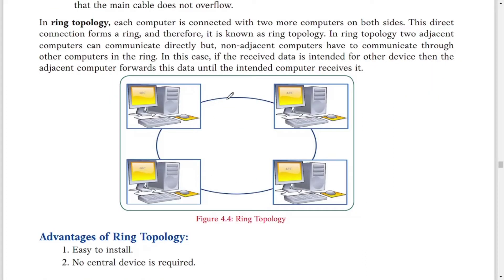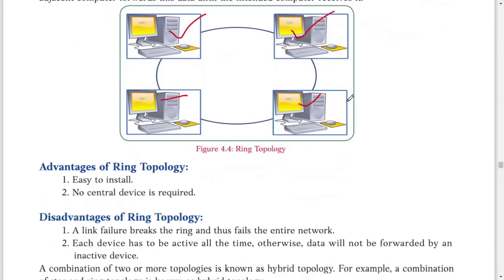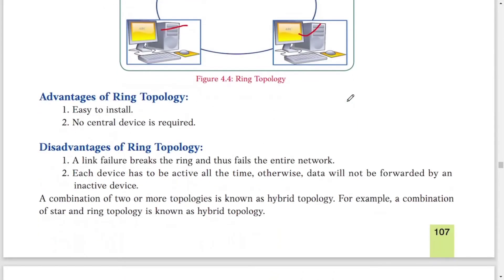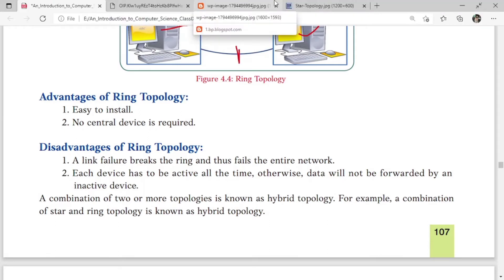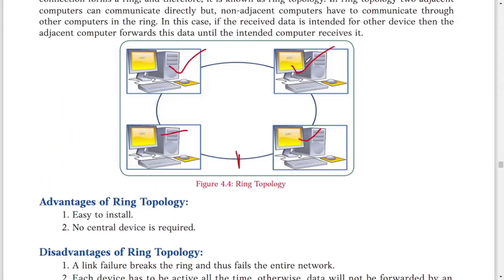In ring topology, all computers are connected in a circular way. Each computer has two adjacent nodes, and a non-adjacent computer must communicate through intermediate computers. Advantages: easy to install, no central device required. Disadvantages: a link failure breaks the ring and fails the entire network. Also, every device must be active all the time — if one computer is turned off, data travelling through it will stop, meaning all computers must be on in ring topology.